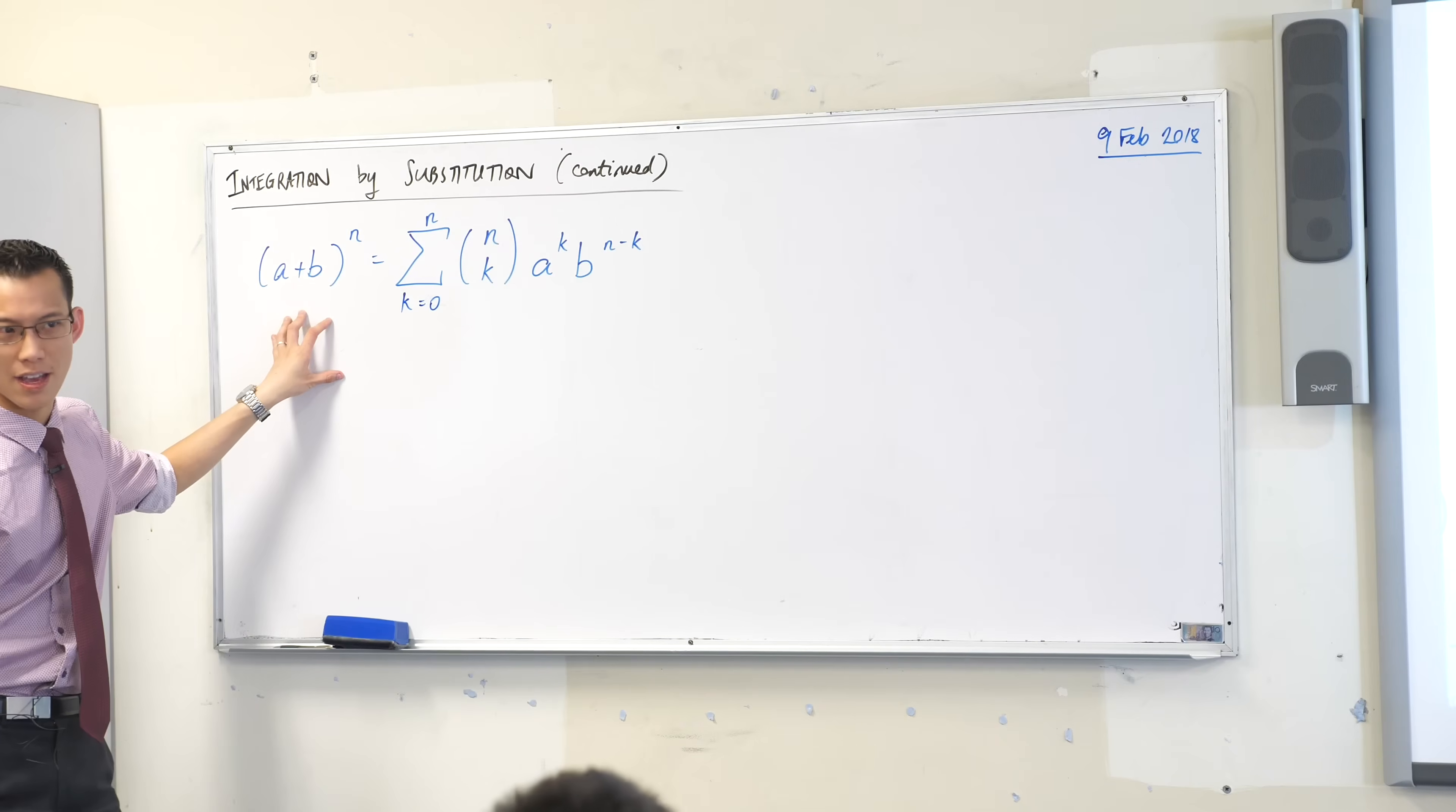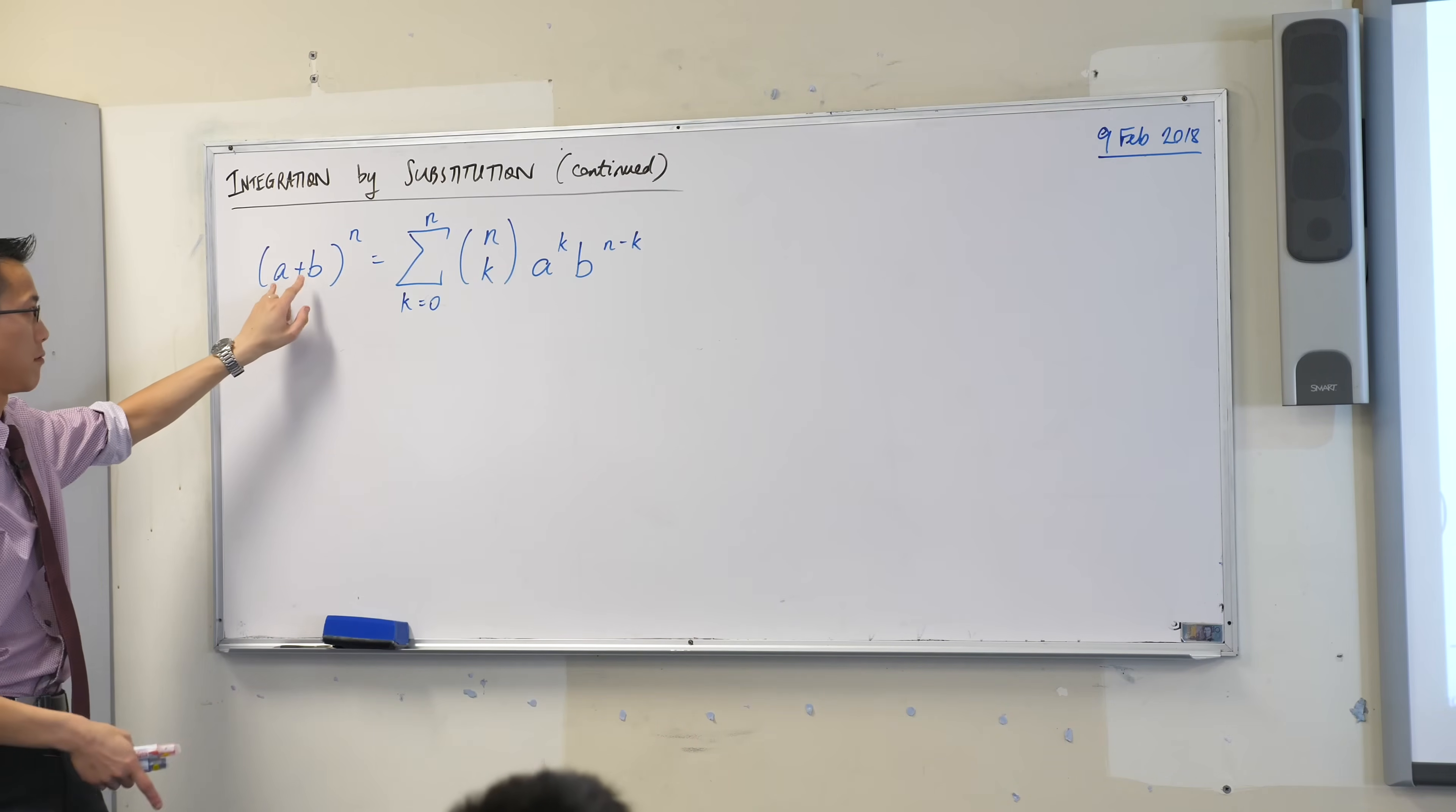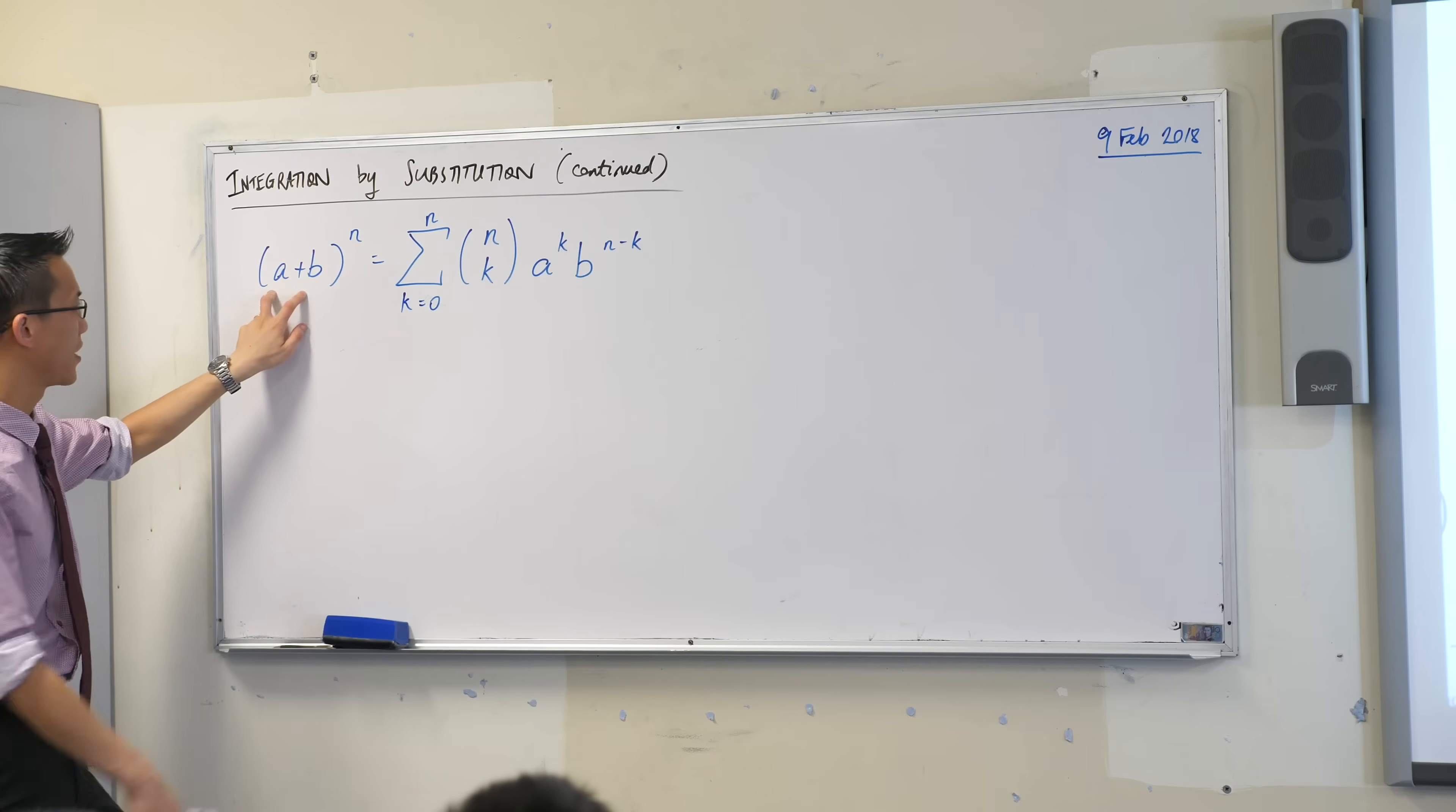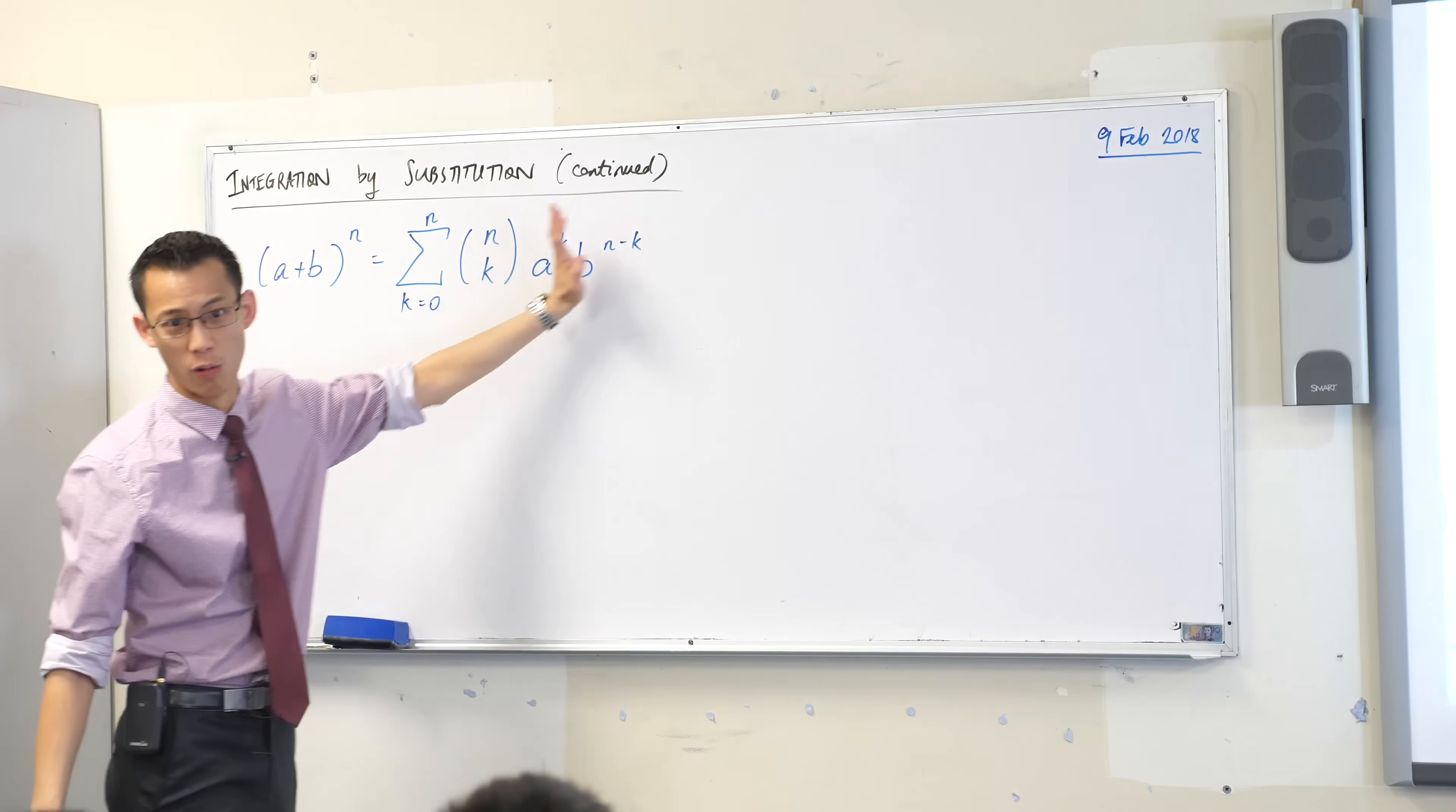What is this thing over here on the left-hand side? This a plus b, we have a special name for this. We call it a binomial, right? It's not just any sum, it's a two-term sum, so it's a binomial. When you raise it to a power, it'll expand out to this long, awful thing.